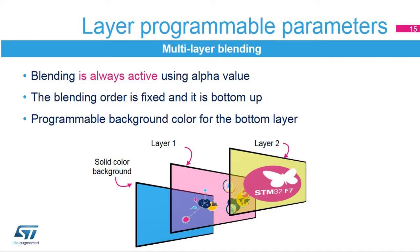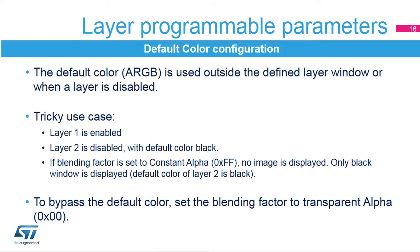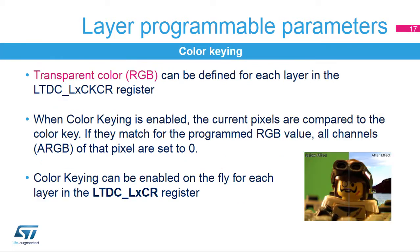The LTDC features configurable blending factors. The blending order is fixed and bottom-up. If two layers are enabled, layer 1 is first blended with the background color, then layer 2 is blended with the result of that blending. Each layer can have a default color in ARGB format, used outside the defined layer window or when a layer is disabled. In a tricky use case: if layer 1 is enabled and layer 2 is disabled with default color black and the blending factor is set to constant alpha 0xFF, only a black window is displayed. To bypass the default color, set the blending factor to transparent, alpha equals 0x00.